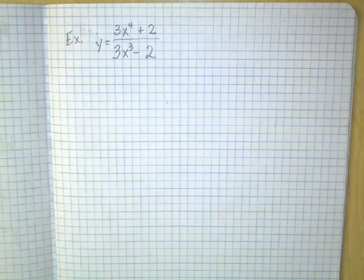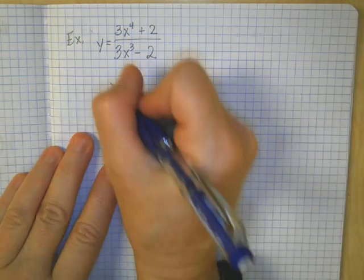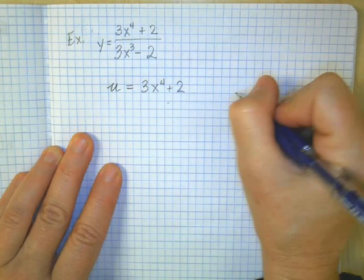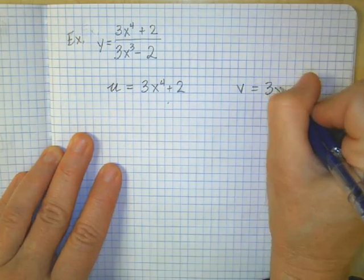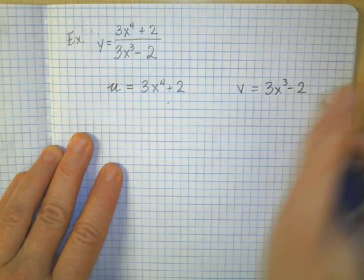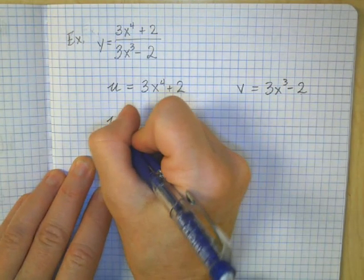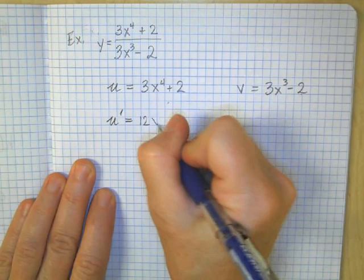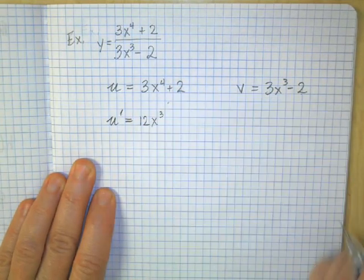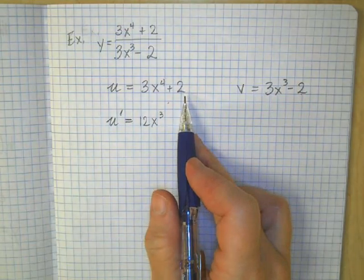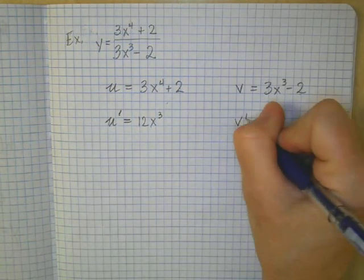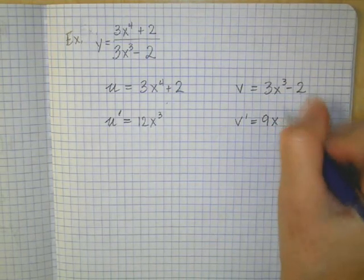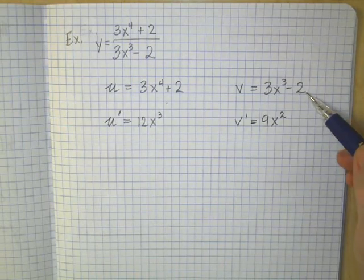The first thing I want to do is identify what's u and what's v. So u is equal to the numerator and v is equal to the denominator. Then I want the derivative of u — we did this in class: 4 times 3 is 12, subtract 1 from the exponent, leaves me with x cubed, and the 2 constant just disappears. And the derivative of v: 3 times 3 is 9, subtract 1 from the exponent, I'm left with x squared, and the derivative of negative 2 is just 0.